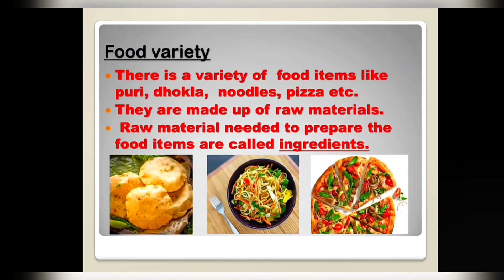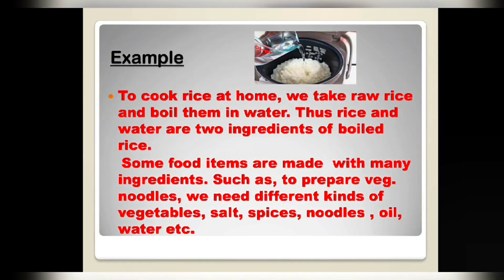Now our first topic is food variety. There are different varieties of food items like puri, dokla, aloo paratha, pancakes, pizzas, etc. They are made up of raw materials — for example, for making roti, the raw material is wheat flour, and for making boiled rice, the raw material is raw rice. The raw materials needed to prepare a food item are called ingredients.